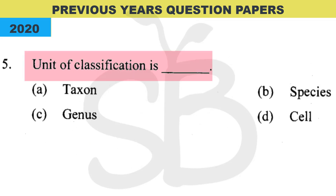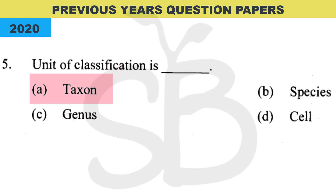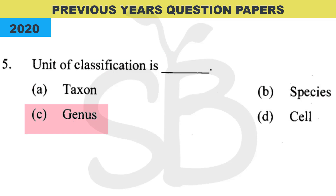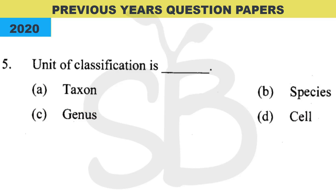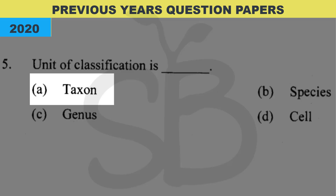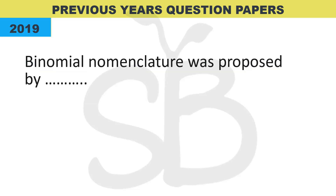Next question: 'Unit of classification is ___.' The options are Taxon, Species, Genus, and Cell. We are talking about classification units in the Living World chapter. The correct answer is Option A — Taxon, or Taxa.